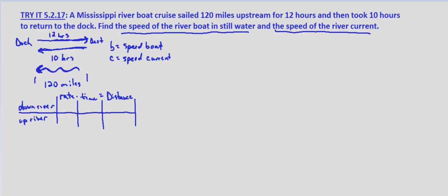And we know that the distance is 120 miles in both directions. So if we let B equal the speed of the boat and C equal the speed of the current.